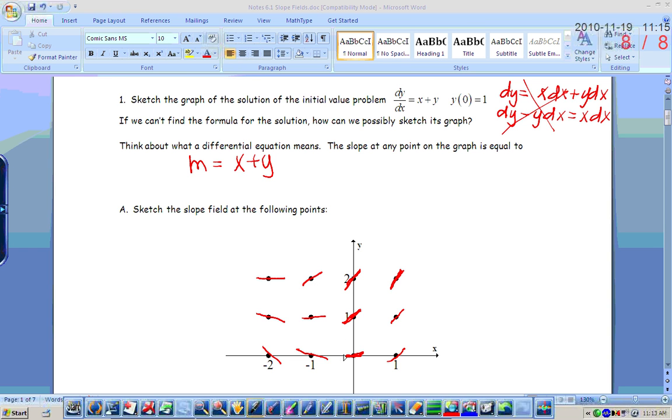Okay, so, this is supposed to be a slope of negative one. This is supposed to be a slope of negative one right here. That's supposed to be a slope of negative two. One, two, and then three. Alright, the next question says to sketch the solution curve through the point zero, one by following the slope field.